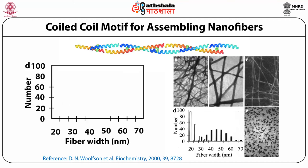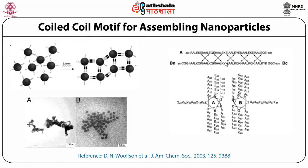A control experiment showed that when there is no sticky end — using another polypeptide chain where no sticky end is possible, giving a blunt end — no extended fiber assembly occurs. The coiled coil motif with sticky ends forms very nice nanofibers, as shown in the computer-generated model. Similarly, this coiled coil motif can be used for assembling gold nanoparticles using two polypeptide chains A and B forming a belt-and-brace peptide system, where gold nanoparticles can be synthesized at the junctions, as confirmed by TEM imaging.